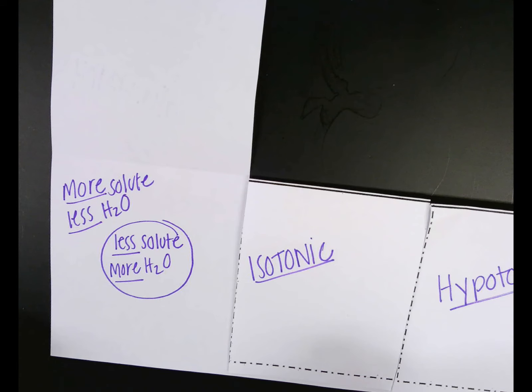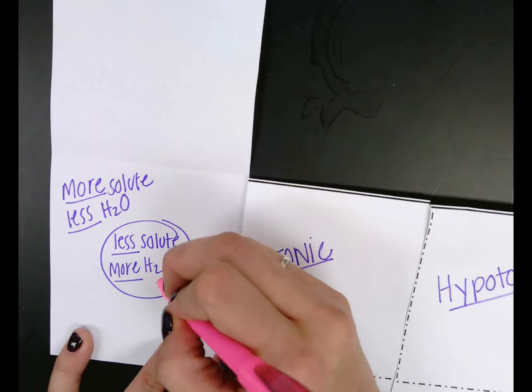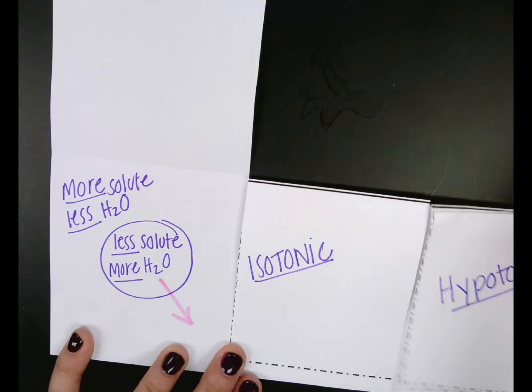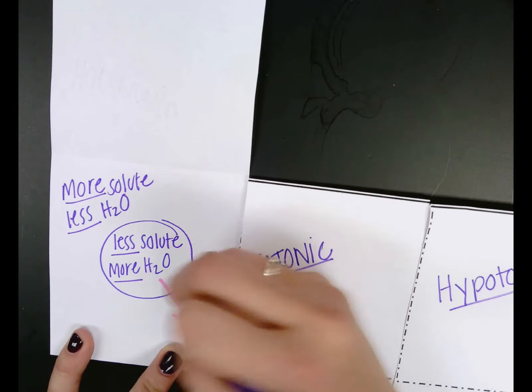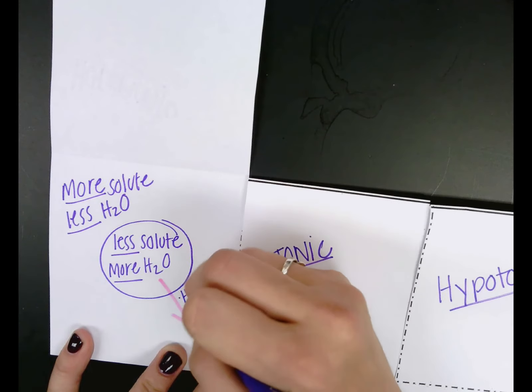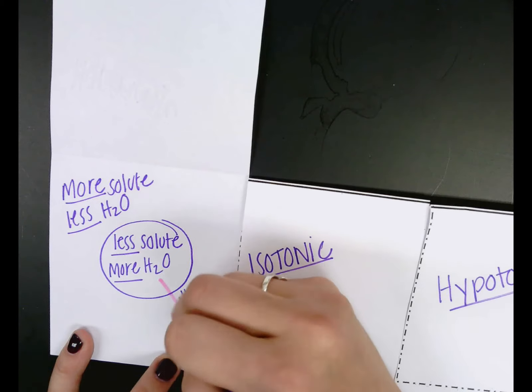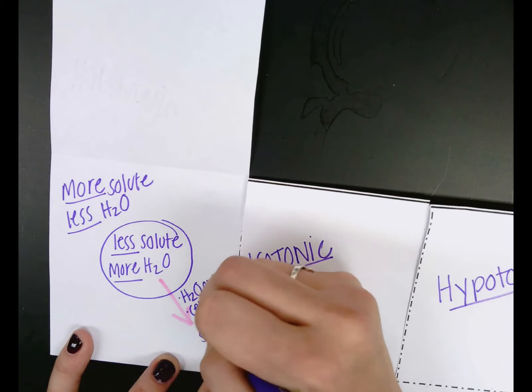Why? Yes, it wants to balance itself out, and we've got a really high concentration on the inside and a low concentration on the outside. So we're going to have that water move out. When that water moves out, what happens to the cell? Cell gets smaller. Exactly right.